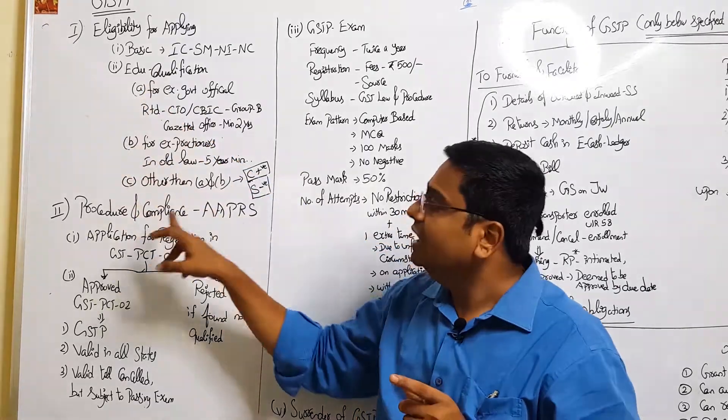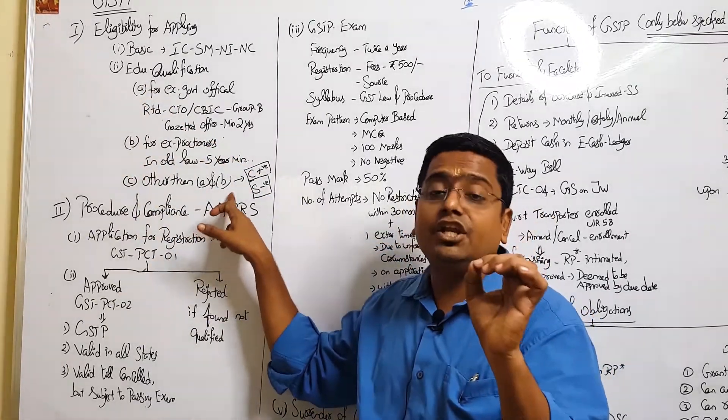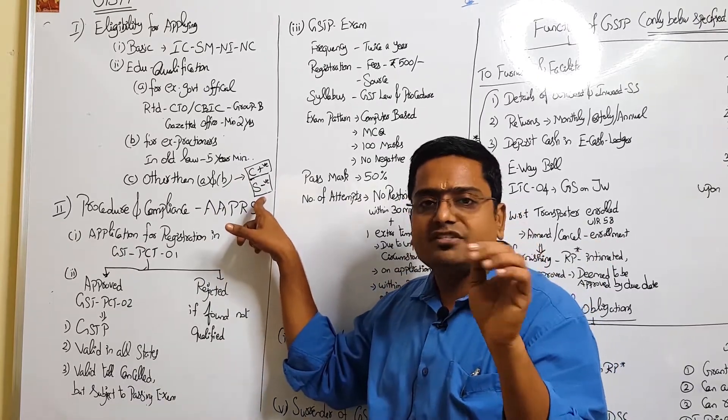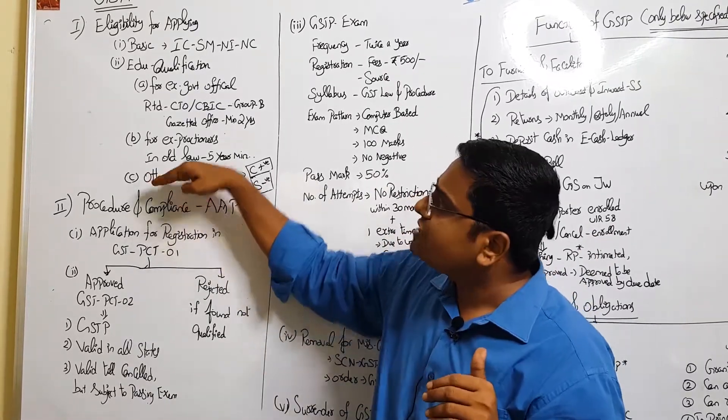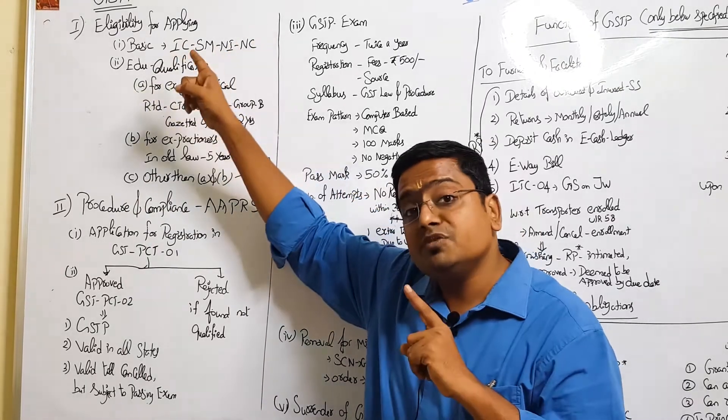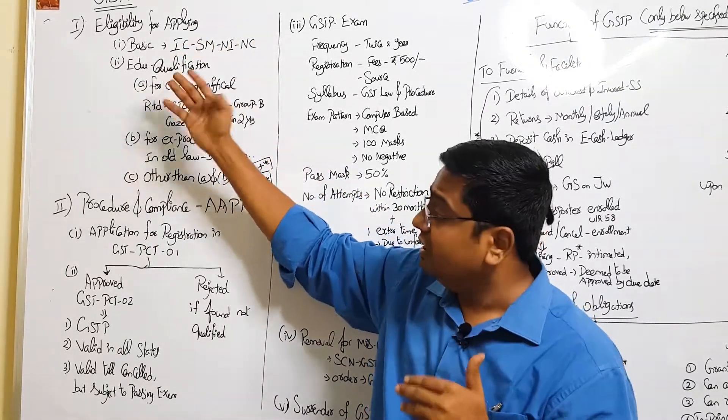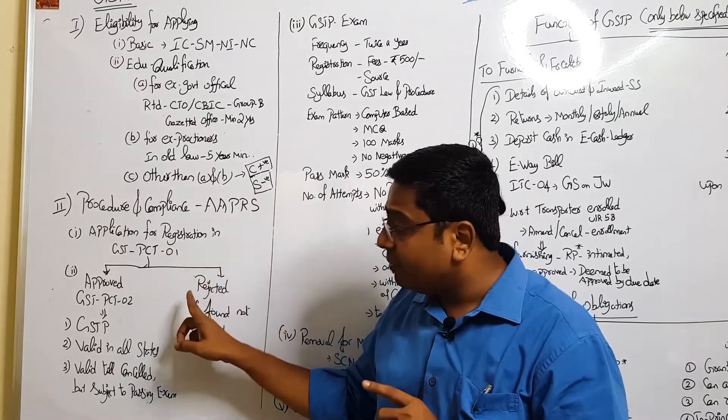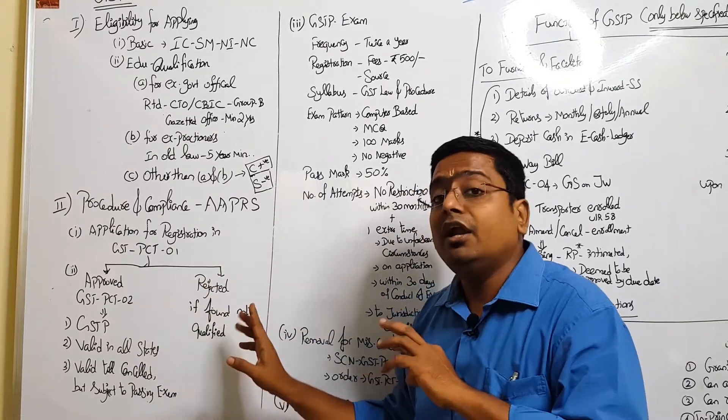But when it comes to other than these two ex-category people, they should possess any degree of commerce stream - any degree of commerce stream. But science graduate, science basis will not be entertained. So upon satisfying these two qualifications - one is basic and then education - they have to make an application in PCT-01.